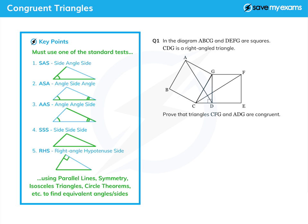Right, let's have a look at this question. Just before we do that, let's have a look at this bit at the bottom. There are all sorts of ways you can show that things are the same. There might be parallel lines in your question, there might be symmetry, there might be isosceles triangles, there might be circle theorems. Anything you can use from the question to help you show that things are the same is fair game.